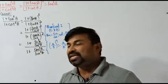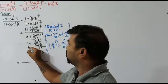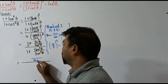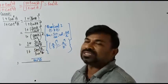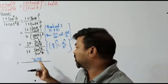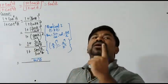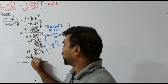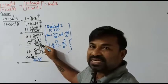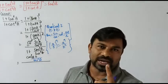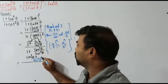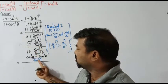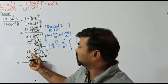Now take the LCM in the numerator. The LCM of cos square a and 1 is cos square a. One goes into cos square a, so we get cos square a times one equals cos square a, plus cos square a goes into cos square a once, giving sine square a. So the numerator becomes cos square a plus sine square a, all over cos square a.